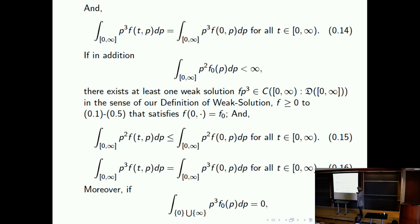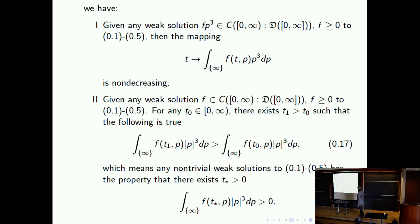Energy conservation is in this extended sense. We also conclude that the mass does not grow — the mass remains uniformly bounded, bounded by the initial condition. The energy is constant for all times. Under the condition that the initial condition is nice, away from zero and infinity, you can get all the other properties. One key property is that as a function of time, the total energy at the point at infinity is a non-decreasing function.